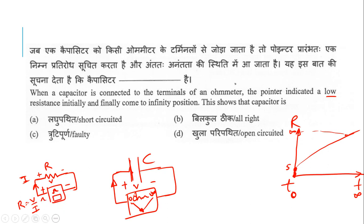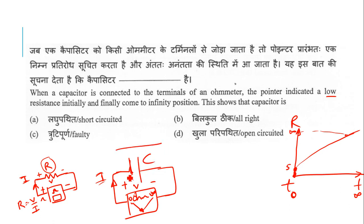When we connect the capacitor to the ohmmeter, voltage feeds in and current flows. Initially, the capacitor acts as a short circuit — a complete closed circuit. So it starts to charge. The voltage starts to build up exponentially. Since the capacitor is a short circuit at first, the measured resistance is very low.